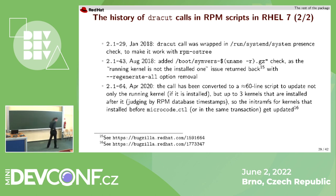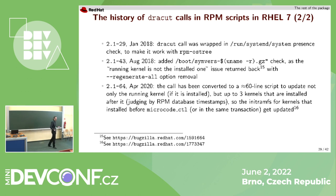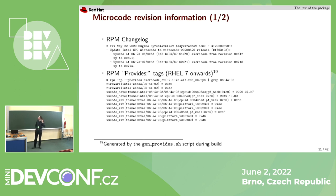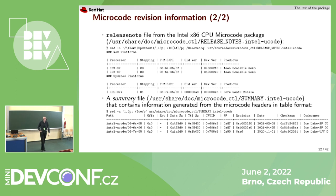In the end we settled on a somewhat unusual behavior: we update the initramfs for the kernel we are currently running on, and for up to three kernels that are newer than the running kernel. This allows us to also update the initramfs for kernels installed after — or together with — the microcode update. There is also documentation covering the caveats and the microcode itself. For those who want to find out which microcode revisions are part of a specific microcode_ctl update package, there are ways to do that, as well as information installed as part of the package itself.